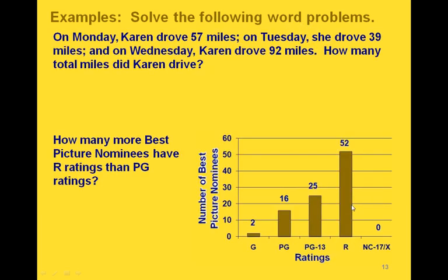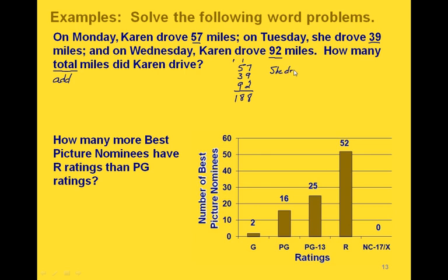On Monday, Karen drove 57 miles. On Tuesday, she drove 39 miles. And on Wednesday, Karen drove 92 miles. How many total miles did Karen drive? The keyword 'total' signals that we should be adding. So we take 57 plus 39 plus 92. We have 7 plus 9 is 16, plus 2 is 18 — carry the 1. Then 1 plus 5 is 6, plus 3 is 9, plus 9 is 18 — carry the 1 again. So we get an answer of 188. She drove a total of 188 miles.